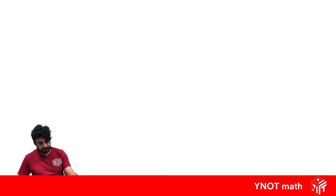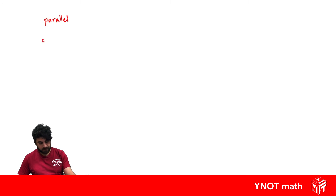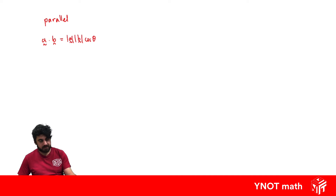Let's talk about parallel lines first. We've already looked at the dot product of two vectors. We know the dot product of two vectors A and B equals the magnitude of A times the magnitude of B times cos of the angle between them. If vectors are parallel, we can think about bringing them together.